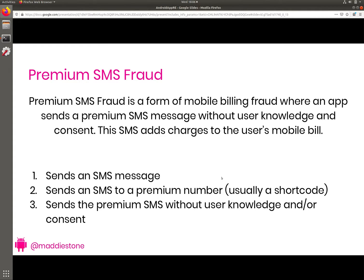In the US and North America in general, as well as Western Europe, premium SMS mobile billing is not as common, but in the rest of the world it is. An example is those campaigns that say to donate to earthquake relief, text from your mobile phone 55567, and that will charge $10 from your mobile bill. They're usually short codes as a way to identify a premium number. The third part for something to qualify as fraud is that they have to do those first two things without the user's knowledge and without the user's consent.